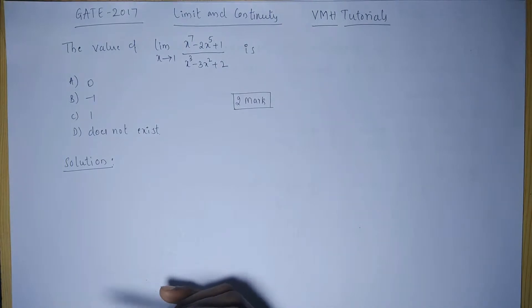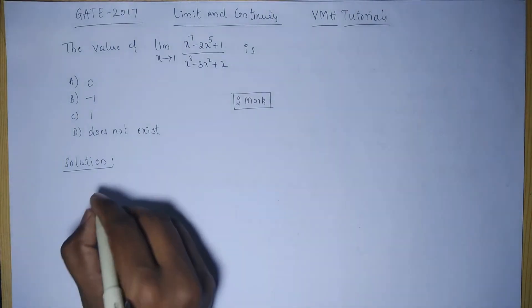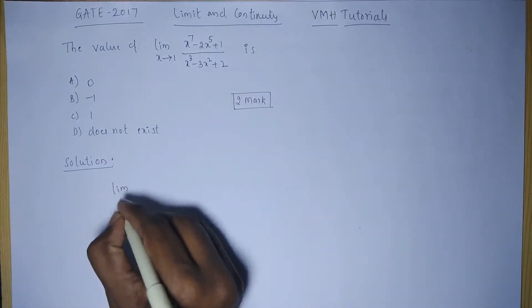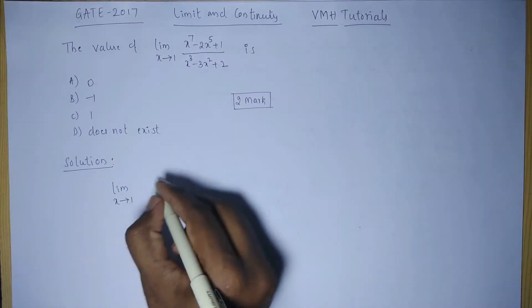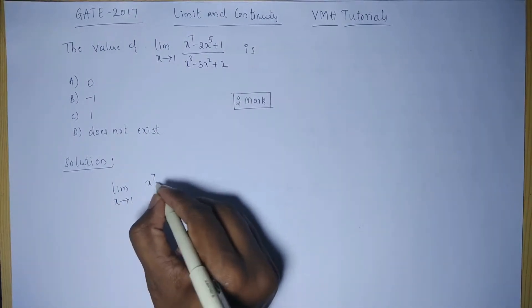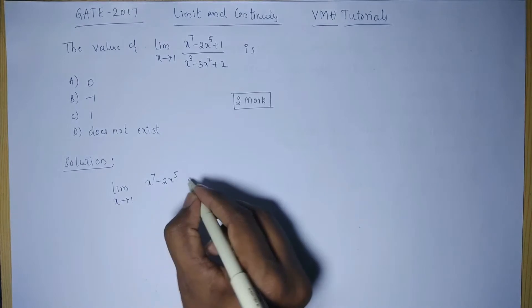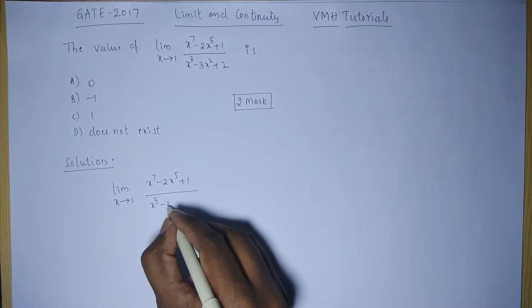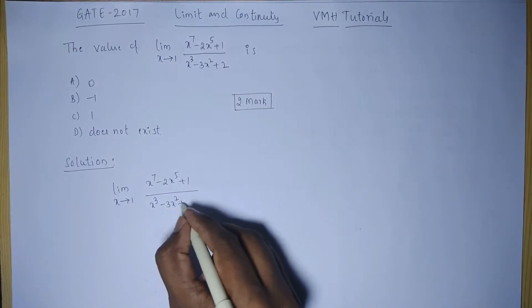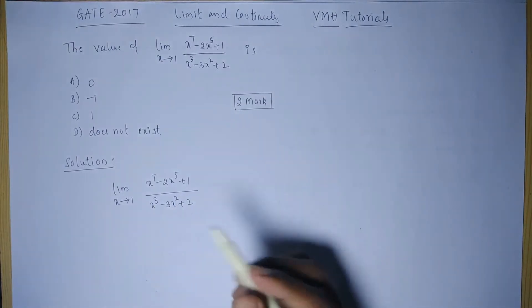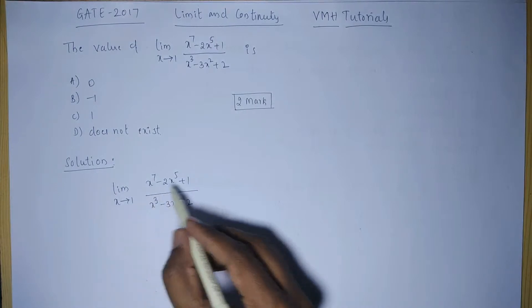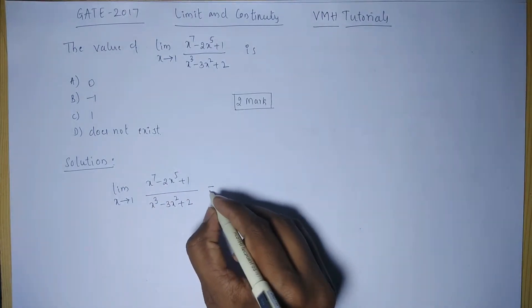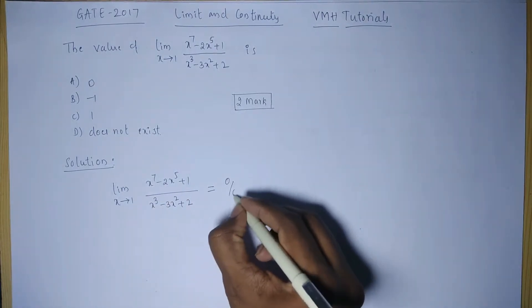Solution: limit as x tends to 1 of (x^7 - 2x^5 + 1) divided by (x^3 - 3x^2 + 2). If we directly put the value of x equals 1 in this expression, this will give us 0 by 0 form.